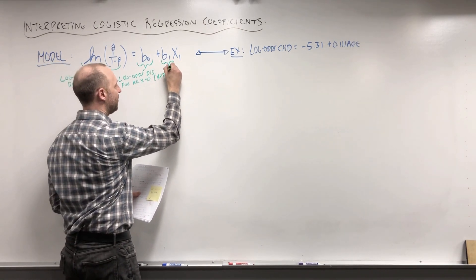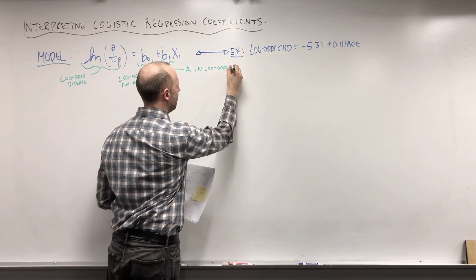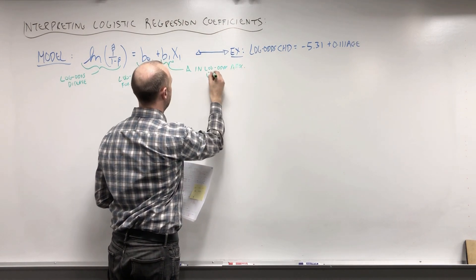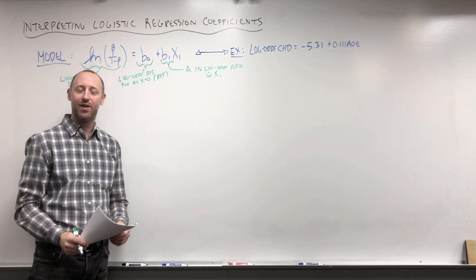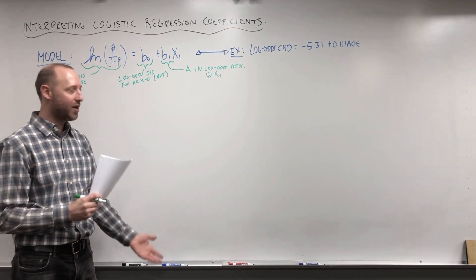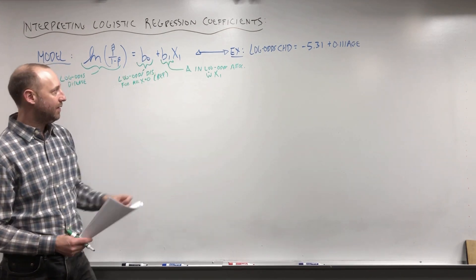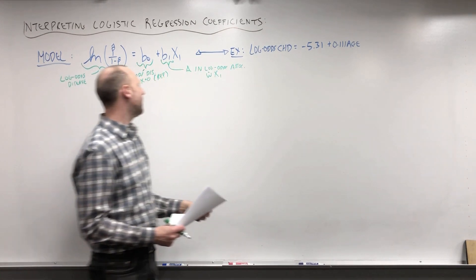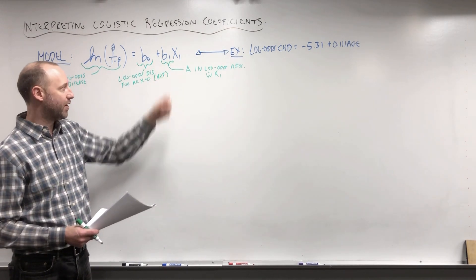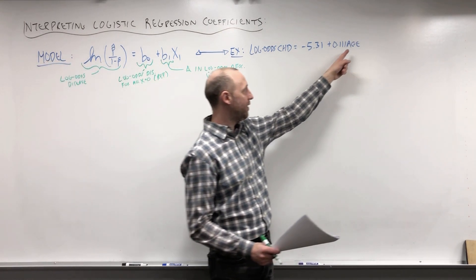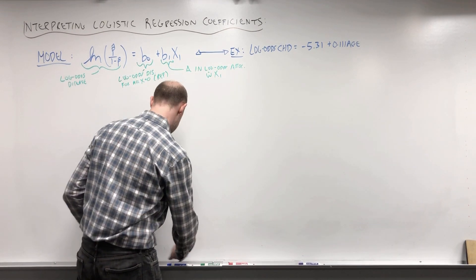B1 tells us the change in the log odds associated with x1. If x1 is categorical — let's say with categories 0 and 1, or not exposed and exposed — B1 gives the change in the log odds of disease for exposed relative to unexposed. In our example, where age is numeric, B1 tells us how the log odds of disease change when x1 increases by 1. It's a slope coefficient. So every time age goes up by 1, the log odds of coronary heart disease go up by 0.111.